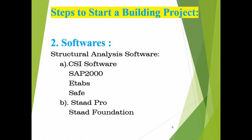In structural analysis software there are many categories. The first category is CSI Software, which stands for Computer and Structures Inc. Within CSI Software, the first is SAP 2000, used for analysis and design of RCC structures, steel structures, and so on. Similarly, ETABS is also CSI software and is used especially for building analysis and design. And CSI SAFE is used for foundation design.